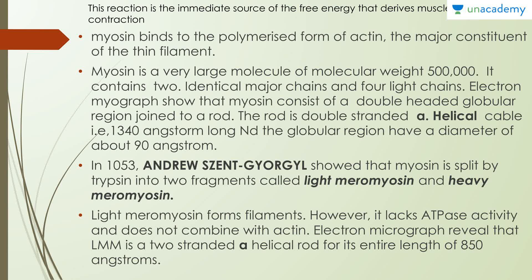Third, myosin binds to the polymerized form of actin, which is a major constituent of the thin filament. Myosin is a very large molecule with a molecular weight of approximately 500,000, containing two identical major chains and four lighter chains. Electron micrographs show that myosin consists of a double-headed globular region joined to a rod — a double-stranded helical cable that is 1,340 angstroms long, with a globular region diameter of 90 angstroms.